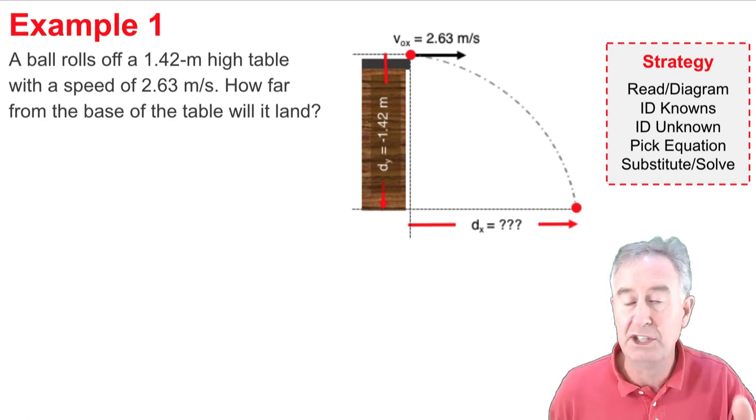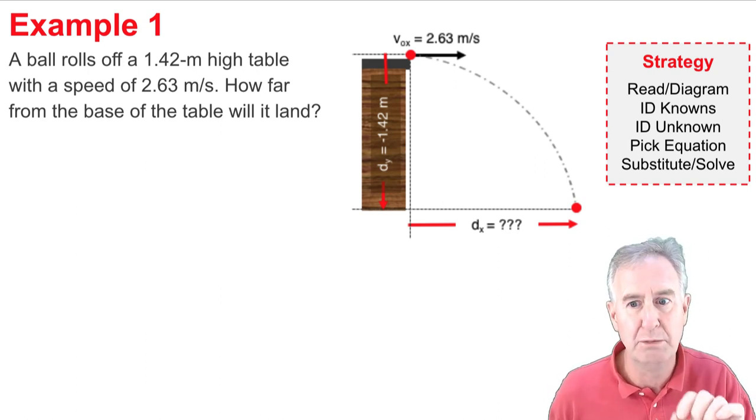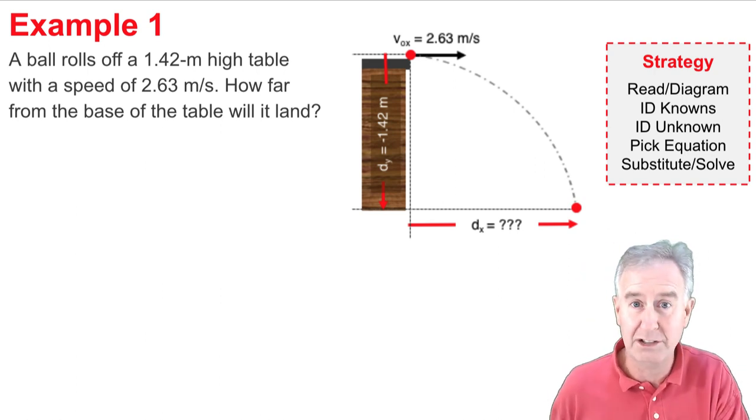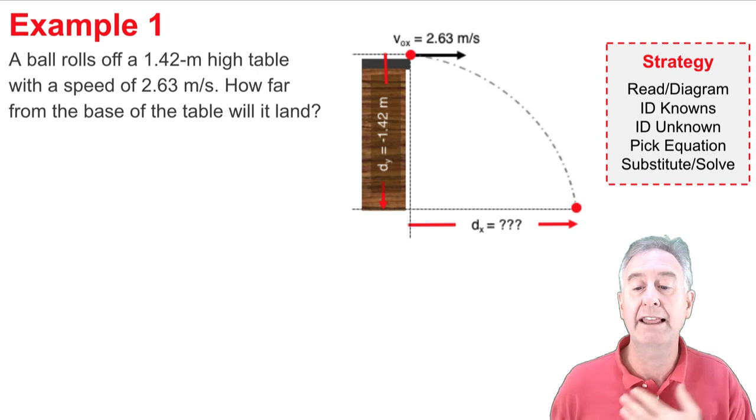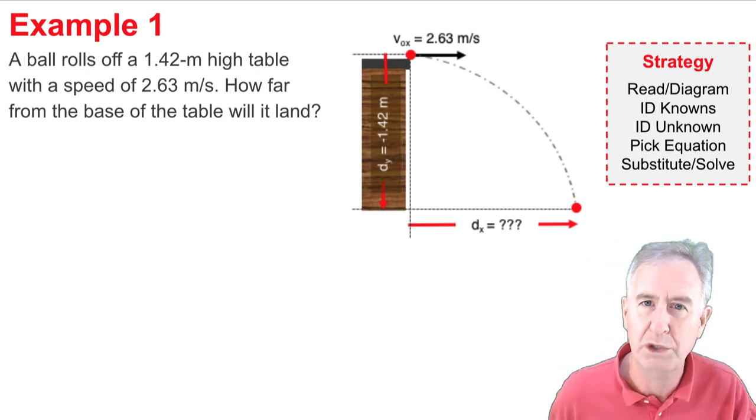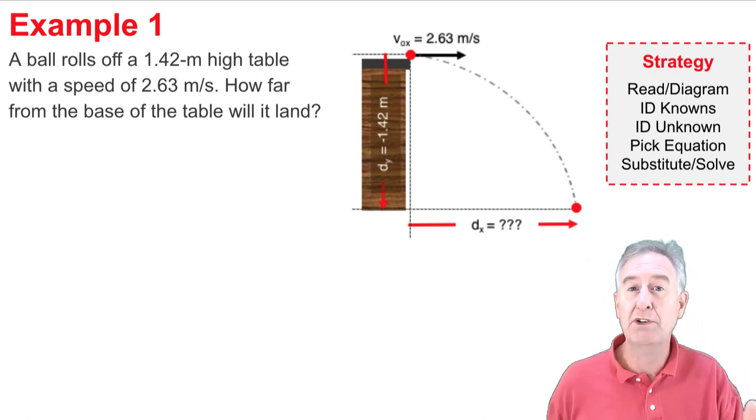I put the original x velocity, it's given as 2.63 meters per second, and then it goes through the typical trajectory and lands on the ground, and I label dx, I'm looking for that, and I know the height of the table, so the dy is negative 1.42 meters. Alright, so that's my first step.